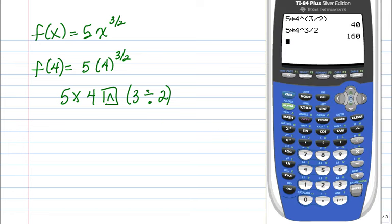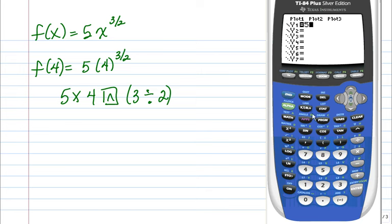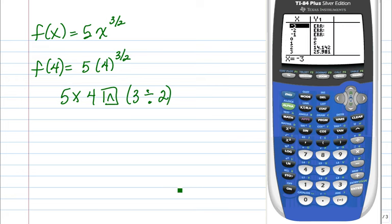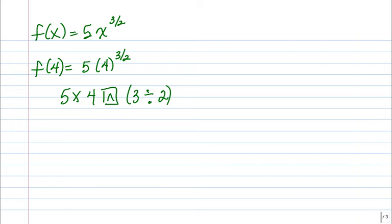Now another way you could do this is you could enter the expression or the function in the equation editor to do 5, your variable, raise 2, and then in parentheses 3 divided by 2. And then go to the table, my second graph. And if we scroll down to the value of 4, we see the output is 40.